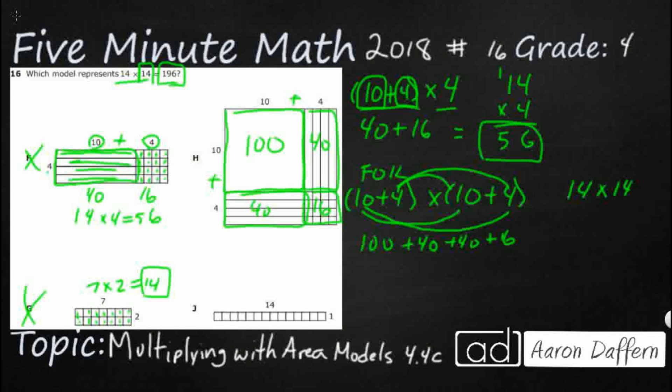That equals 196. And then J is just 14 times 1. Not sure what we're doing there. It's 14. Our answer here is H.